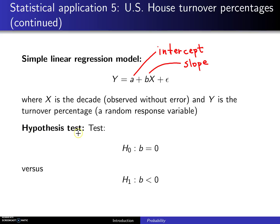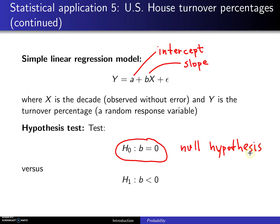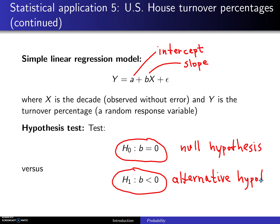Sometimes it's of interest to run what's known as a hypothesis test. In this case we might be interested in whether or not the slope is zero. This H0 has a special name — it is known as a null hypothesis — and in this case we're going to assume that the decade has nothing to do with the mean turnover percentage. What we're trying to show here is H1, which is often called an alternative hypothesis, sometimes also called H sub A.